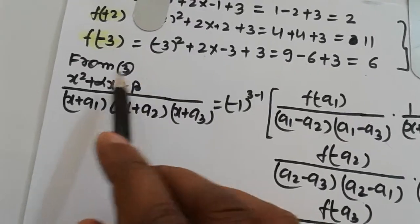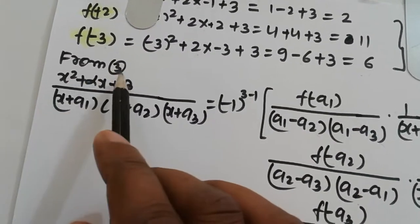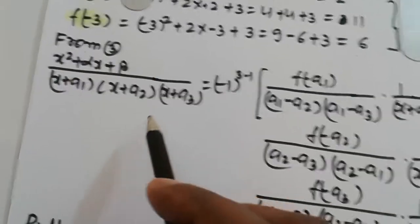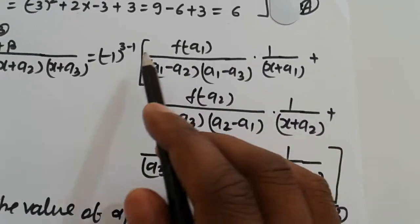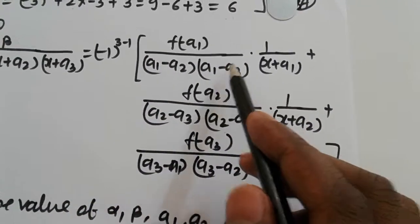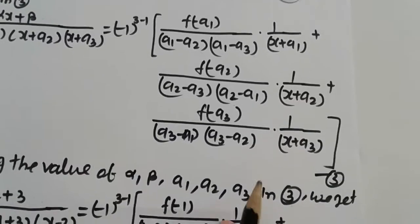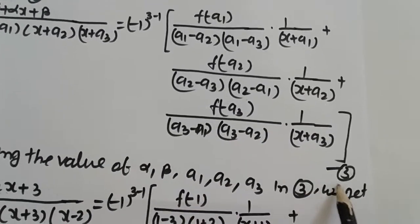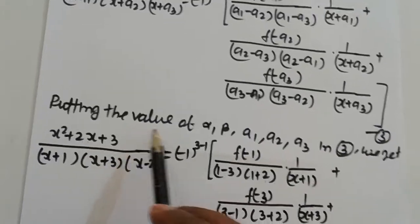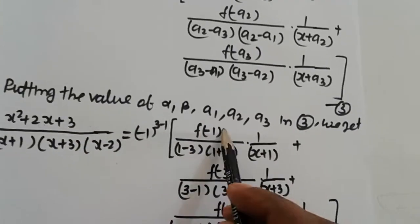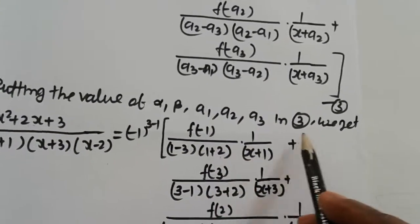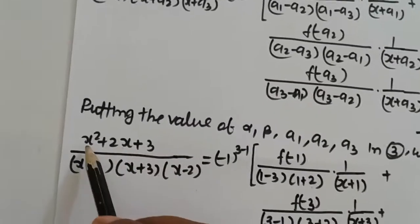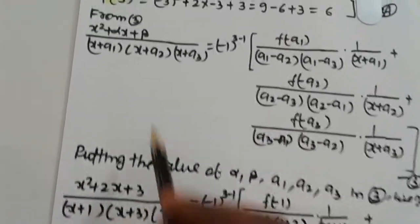So now using equation 3 for n equal to 3, we write the left hand side with the first, second, and third terms. Putting the values alpha equals 2, beta equals 3, a1 equals 1, a2 equals 3, a3 equals minus 2 into the formula gives us (x squared plus 2x plus 3) divided by (x plus 1)(x plus 3)(x minus 2).